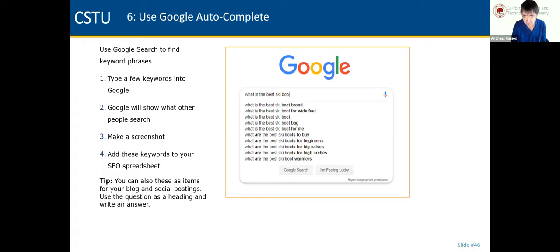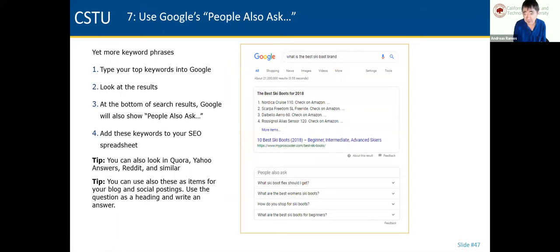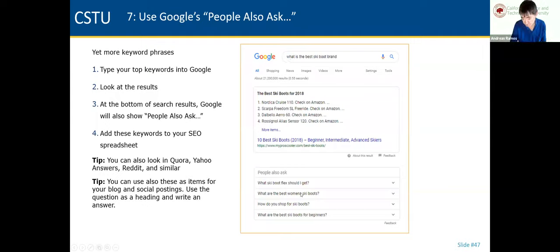Method five: Google Autocomplete. Go to Google and type slowly — for example 'what is the best ski boo' — and don't finish the word. You'll see suggestions from Google showing what other people search for. Take a screenshot and save it. Google may suggest things you wouldn't think of — like 'ski boot brand, wide feet' or 'big calves.' Method six: People Also Ask. When you do a search and scroll to the bottom of the results page, you'll see 'People Also Ask' with more questions people search around ski boots. Screenshot those and add them to the collection.